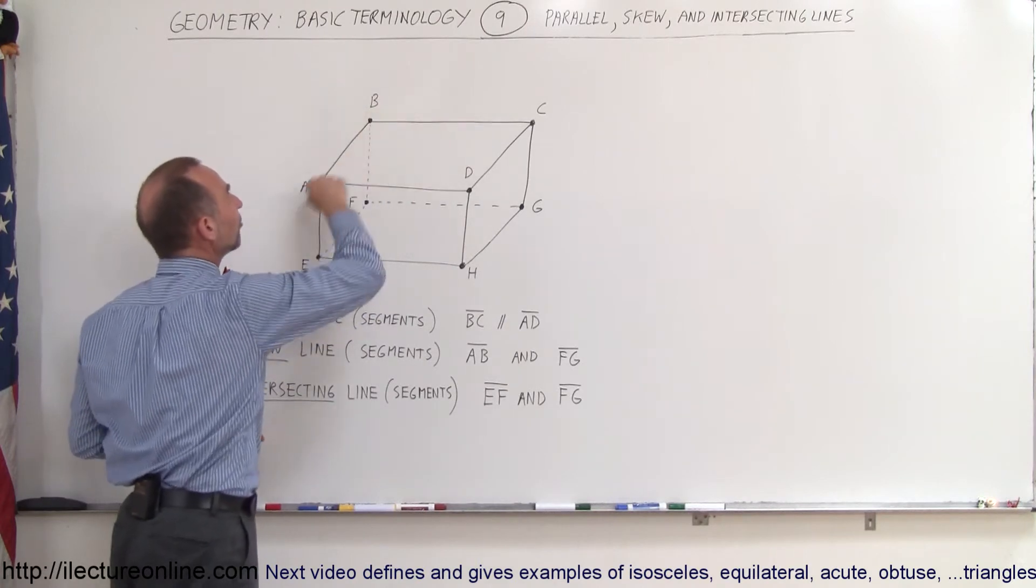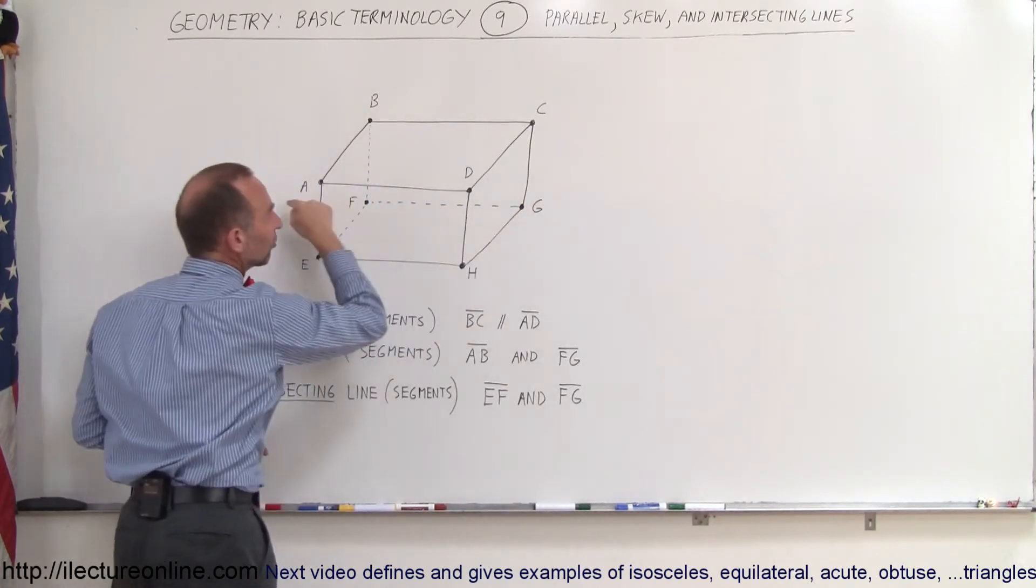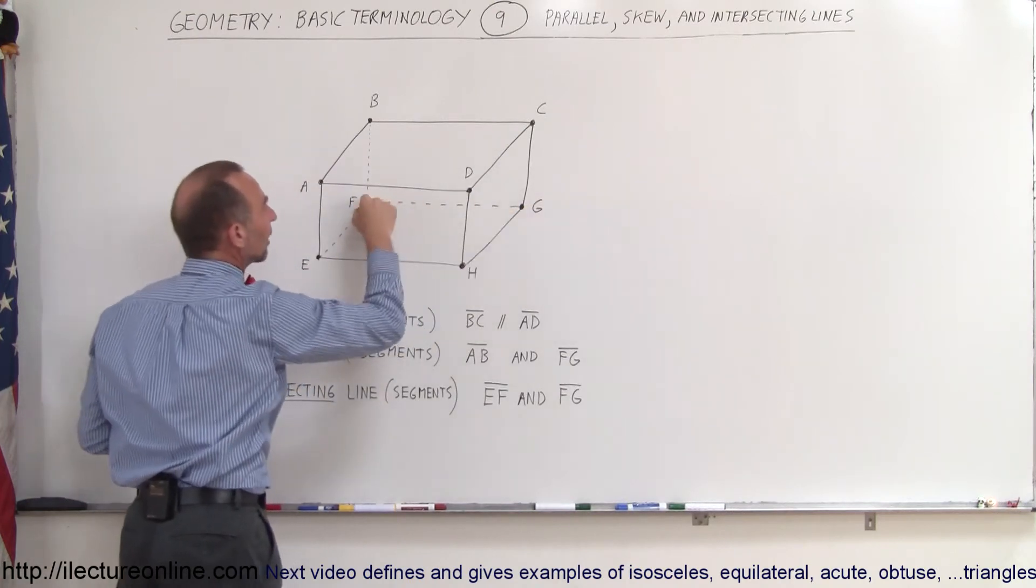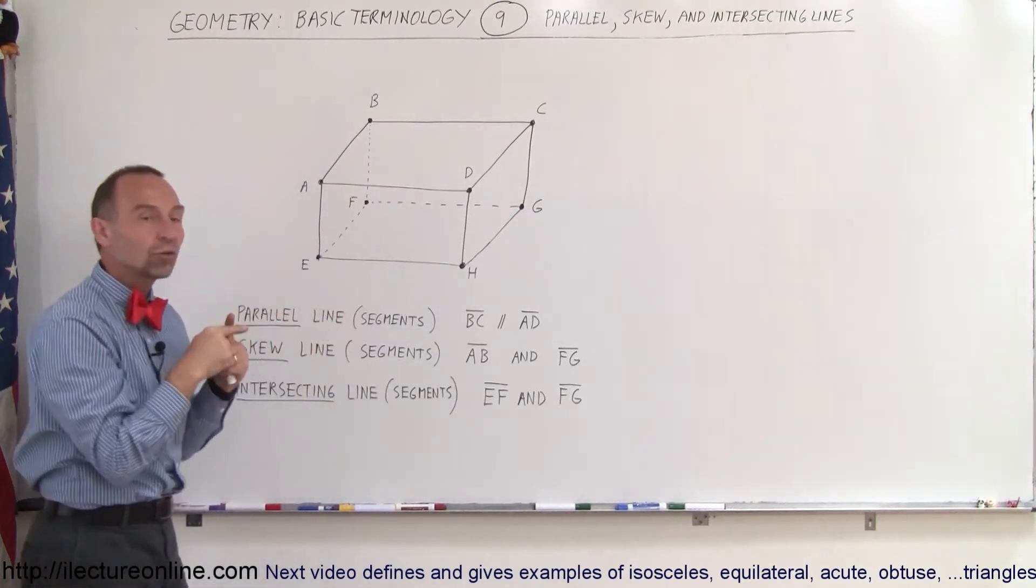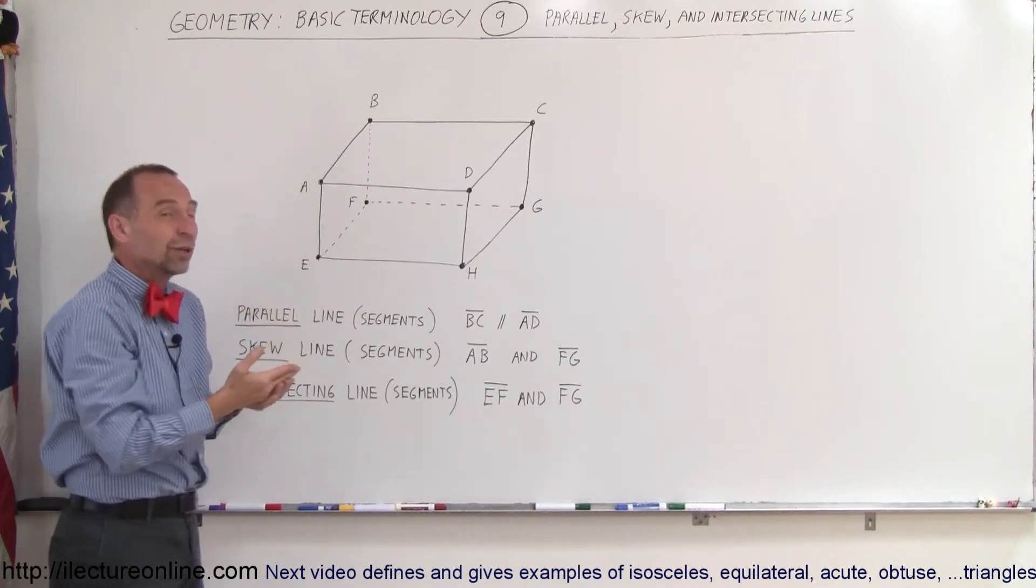Notice that if you extend infinitely in both directions from A to B and from F to G, those lines will never touch. They will never cross one another and will never be parallel. Therefore, they're called skew lines.